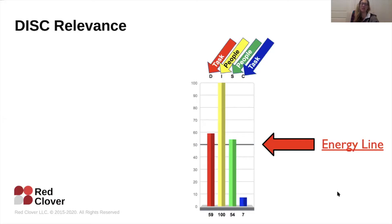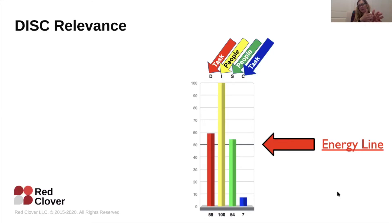Just to categorize how each style plays out: Ds and Cs are more focused on tasks and activities, while I and S are focused on people. Ds and Is tend to be more fast-paced, while Ss and Cs tend to take a little more time.